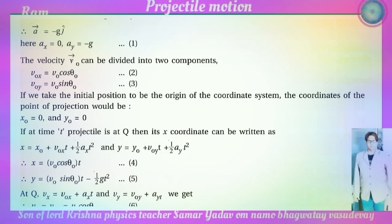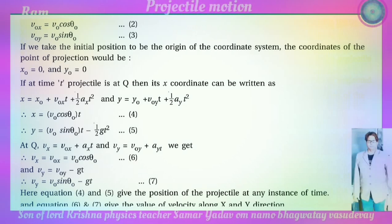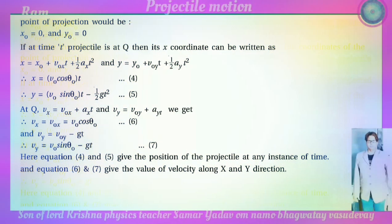At point Q, the velocity components are: v_x equals v-zero-x plus a_x t, and v_y equals v-zero-y plus a_y t. This gives v_y equals v-zero sin theta-zero minus g t. Equations 4 and 5 give the position of the projectile at any instant of time, and equations 6 and 7 give the velocity components along x and y directions.